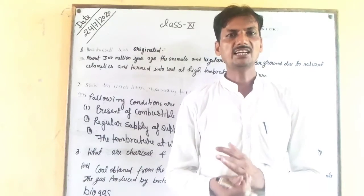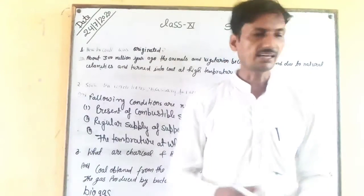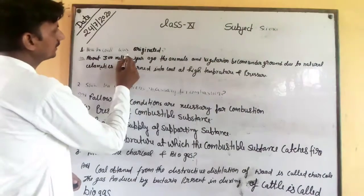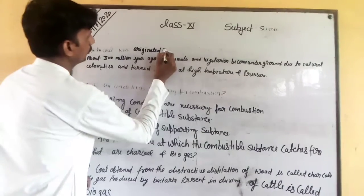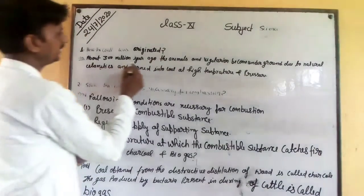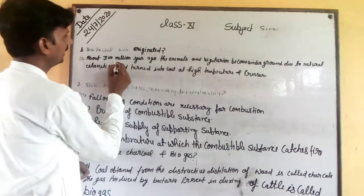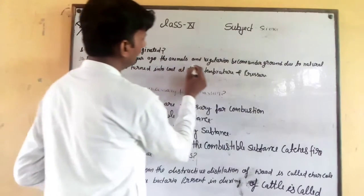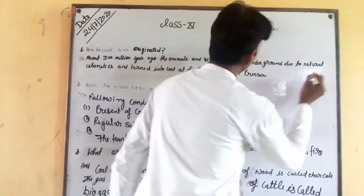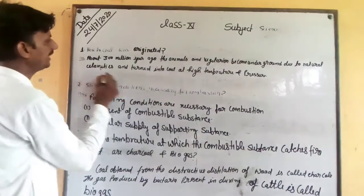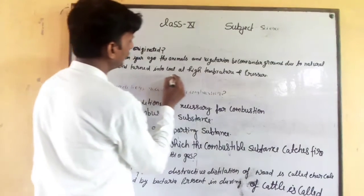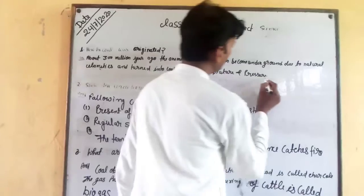In this lesson we will learn about combustion and flame. The first question is: how was coal originated? The answer is that about 300 million years ago, materials became buried underground due to natural climate conditions and turned into coal under high temperature and pressure.